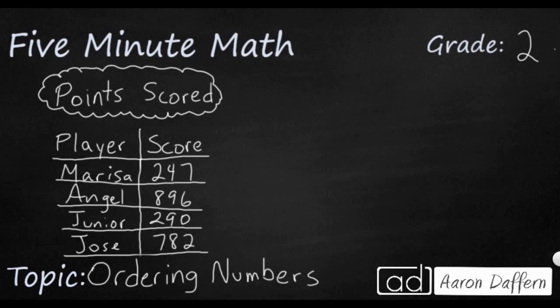So we have on the screen four scores of students that were playing a game and what we're wanting to do is figure out our order of first place, second place, and third place so we can give them trophies if we wanted to. We have Marissa with 247 points, Angel with 896 points, Junior with 290, and then Jose with 782.